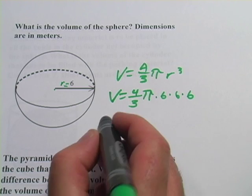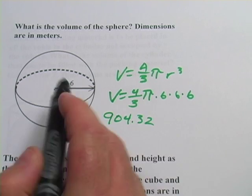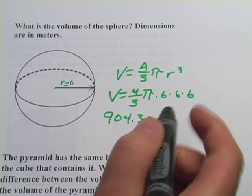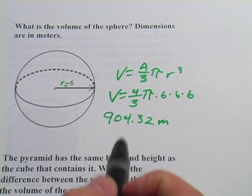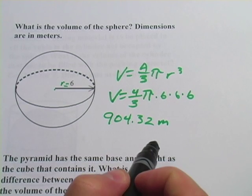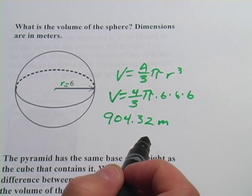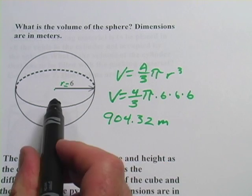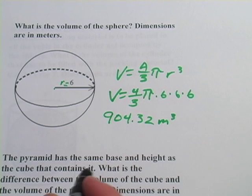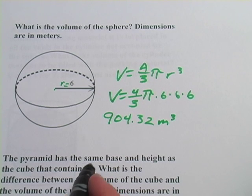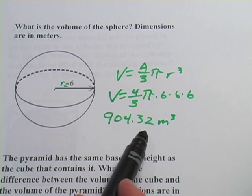I come up with 904.32, and the units are meters. Since this is volume — not area, which is units squared, or distance, which is just units — volume is always cubed. So the volume of this sphere is 904.32 cubic meters.